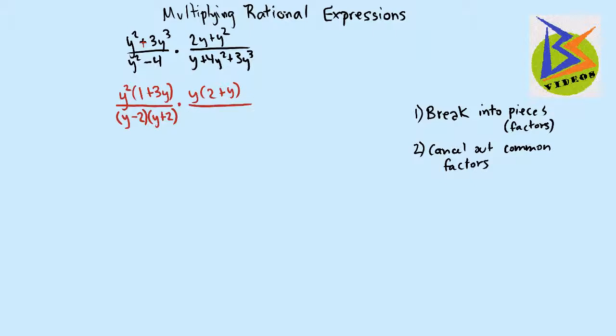And then on the bottom here, we'll take some time and do this over here. With y plus 4y squared plus 3y cubed, we can pull out our greatest common factor of y. So we're left with 1 plus 4y plus 3y squared. And now we see it's a trinomial, so we're going to factor that.